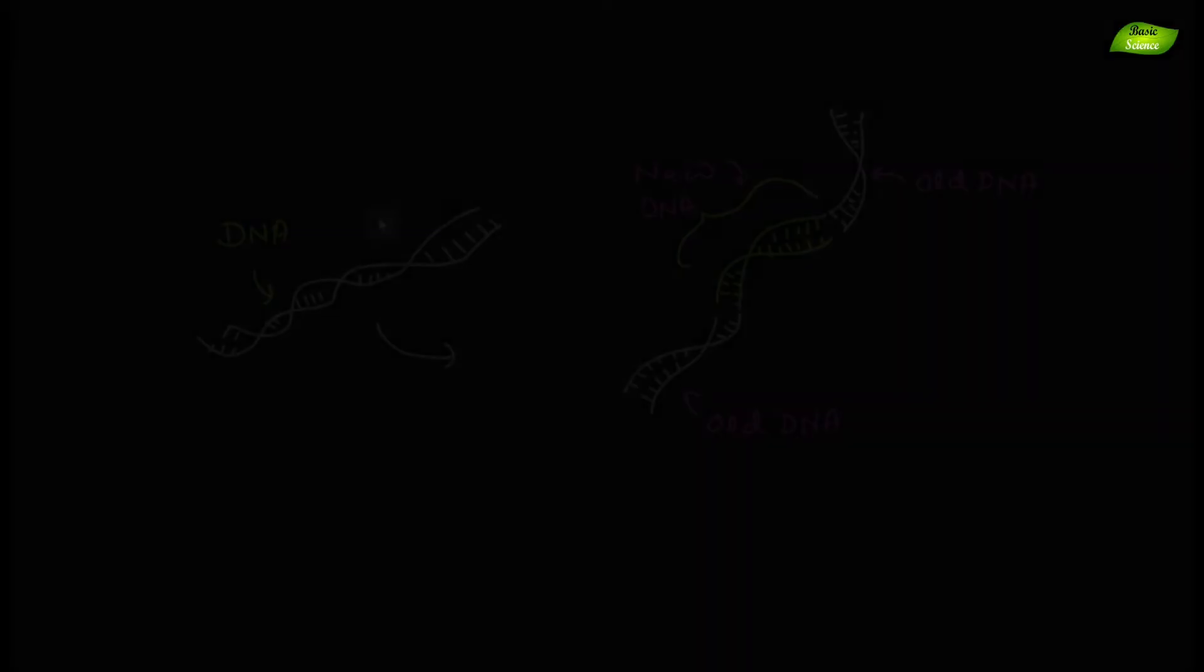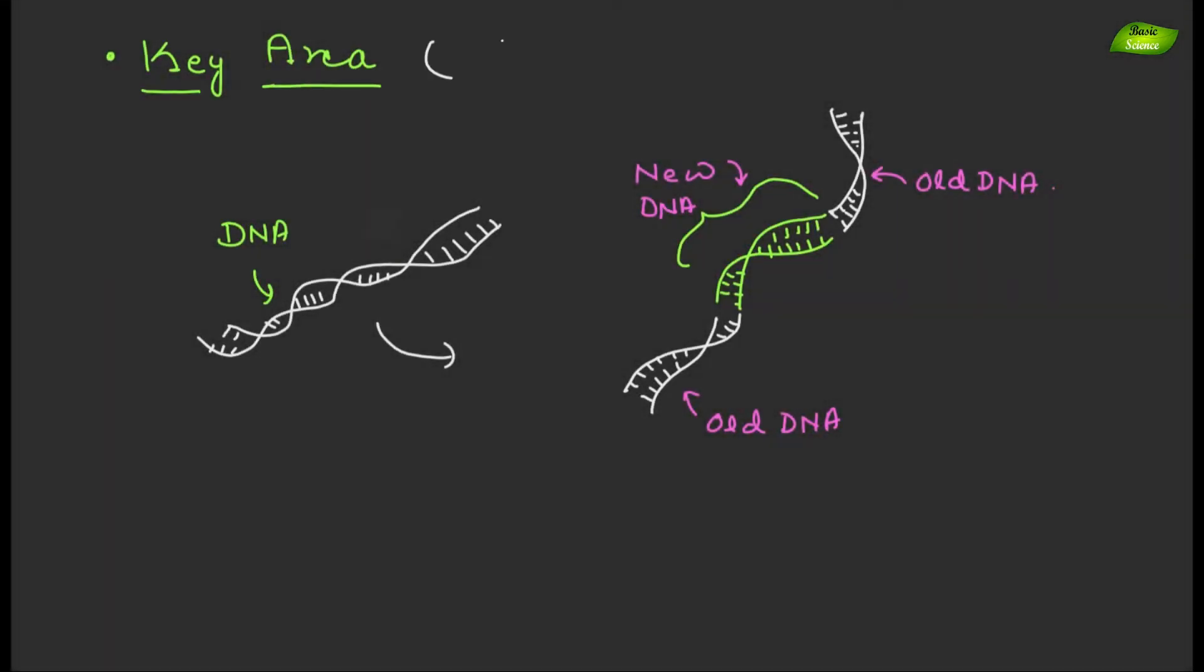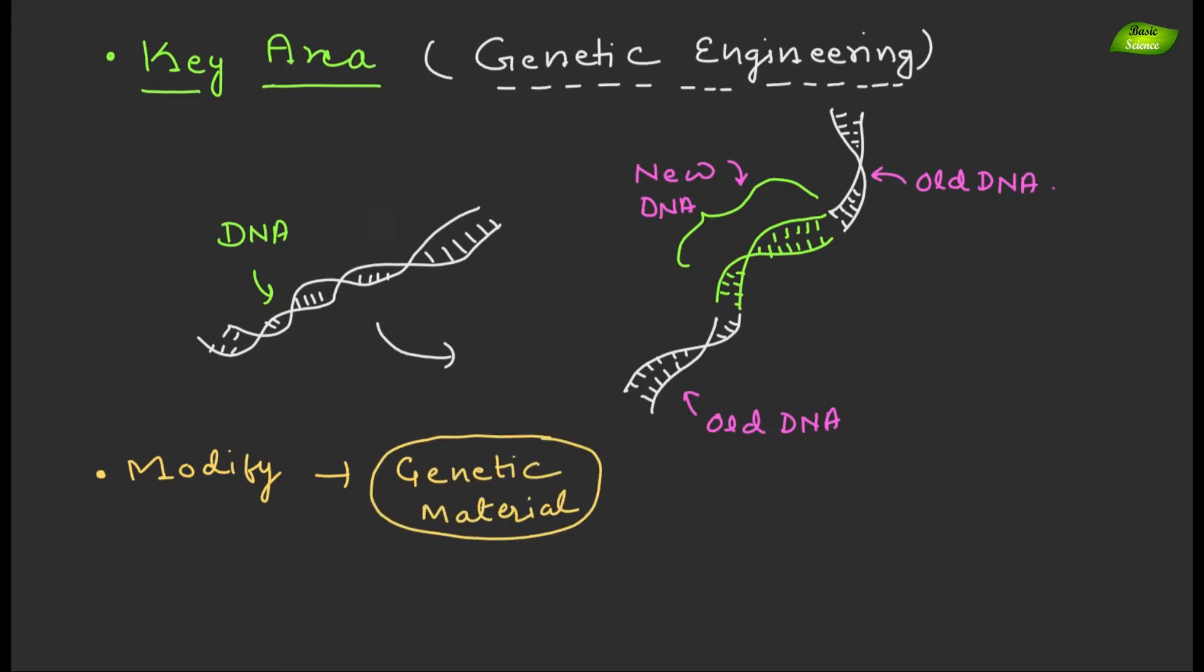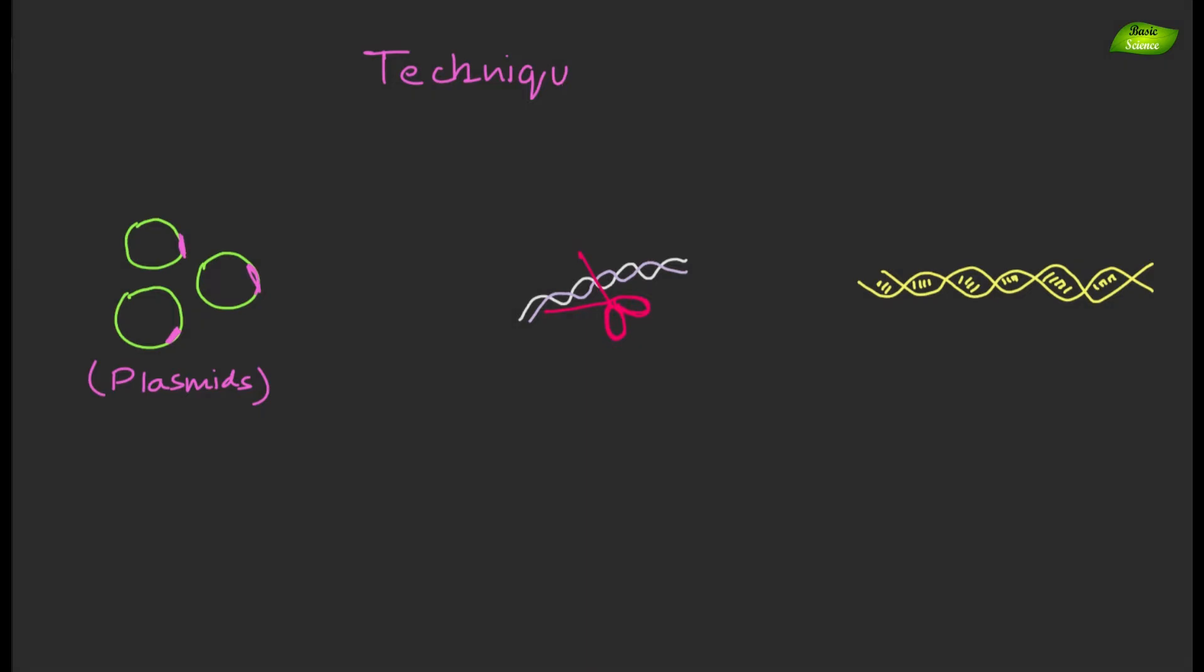One of the key areas of biotechnology is genetic engineering, which involves modifying the genetic material of organisms to achieve specific goals. Techniques such as recombinant DNA technology, CRISPR-Cas9 gene editing and synthetic biology enable scientists to manipulate